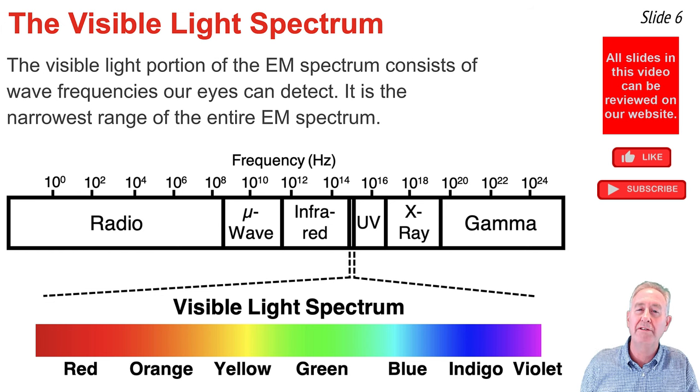The longer wavelength, shorter frequency colors are the red waves. They're found next to the infrared region of the EM spectrum. And the shorter wavelength, higher frequency waves are the violet waves, and they're found located next to the ultraviolet region of the EM spectrum.